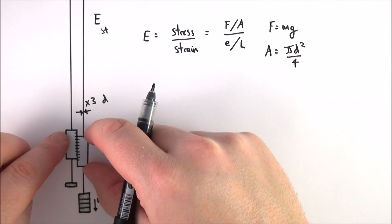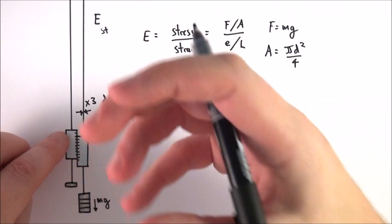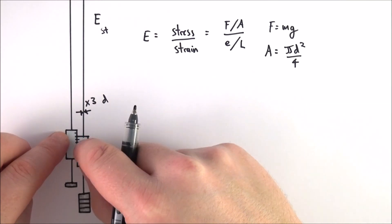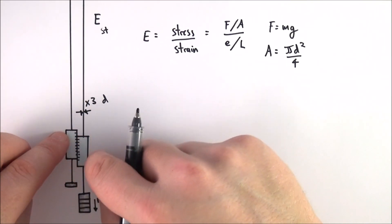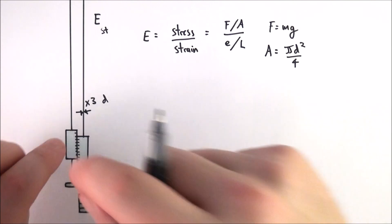As you add more mass, this wire tends to get longer. Obviously, you put more weight in it, it's going to extend, and you can measure very small increments or very small extensions using this method.